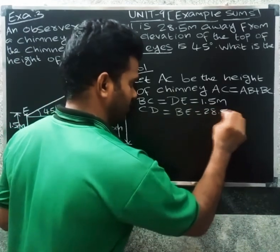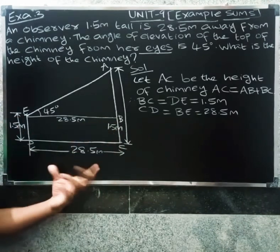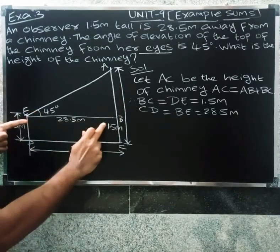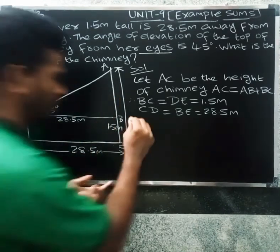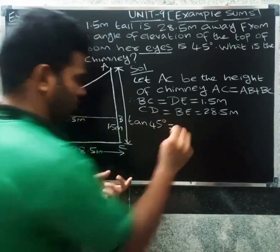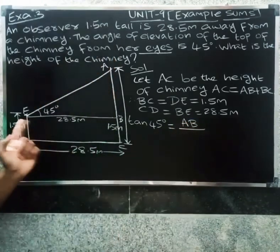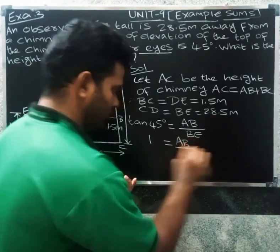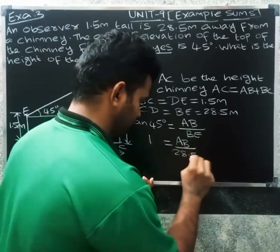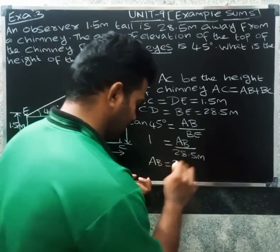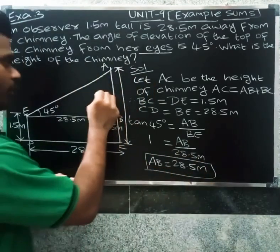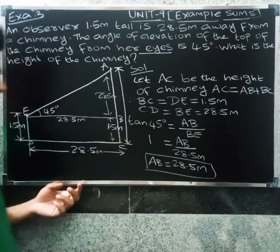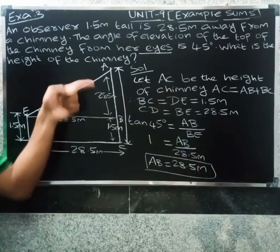From the foot, the distance is 28.5 meter, and the angle here is 45 degrees. So tan 45° equals opposite side AB over adjacent side BE. The value of tan 45° is 1, so AB equals BE, which is 28.5 meter. Therefore AB equals 28.5 meter.